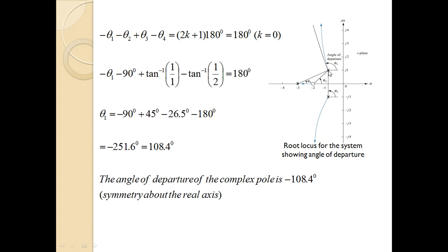Combining: phi = 90° + 153.5° − 45° = 198.5° (approximately), and phi_d = 180° − phi ≈ −18.5°... resolving the calculation gives an angle of departure of 108.4° from the complex pole at −1+j1. For the complex conjugate pole at −1−j1, the angle of departure is −108.4° due to symmetry about the real axis.